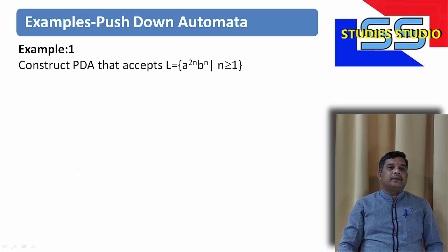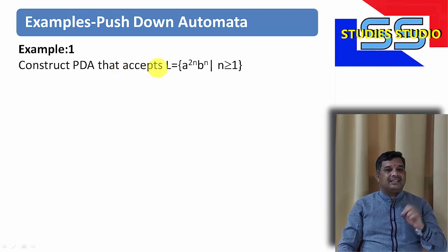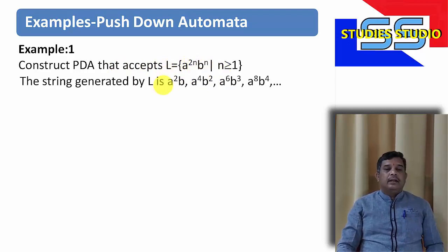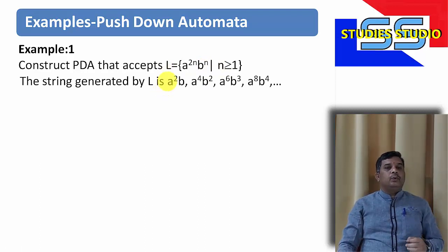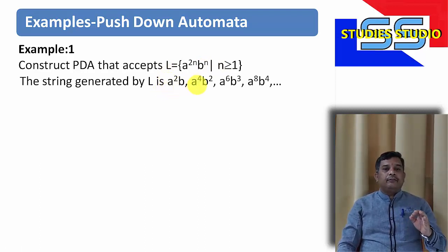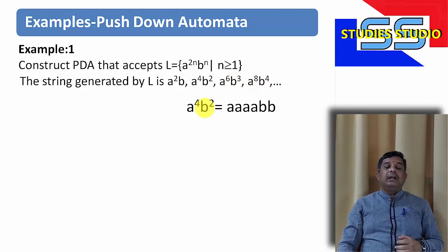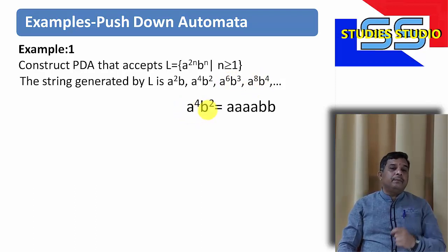Today's first example is: construct a PDA that accepts the language of the form a to the power 2n, b to the power n, where n is greater than or equal to 1. For example, a to the power 4 b squared, a to the power 6 b to the power 3, a to the power 8 b to the power 4. It means the number of a's will be twice the number of b's.